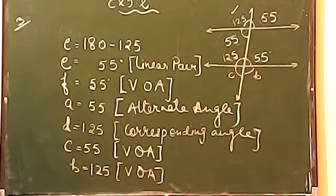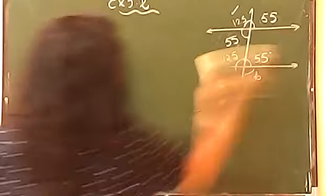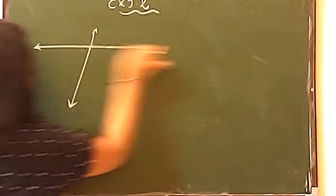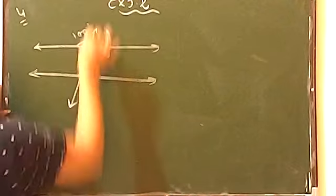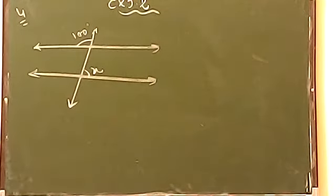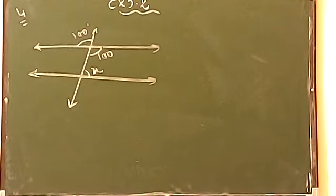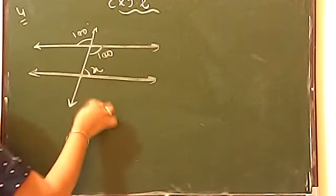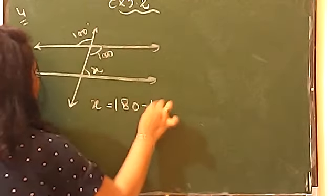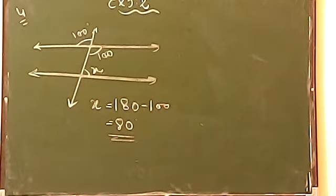Now let us move on to question number 4, which is also an easy question. The diagram shows an angle of 100° and an unknown X. If this angle is 100°, then the vertically opposite angle will also be 100°. Now you know both co-interior angles: 100° and X. The sum of co-interior angles is 180°, so X equals 180 minus 100 equals 80°. These are co-interior angles. Finish.